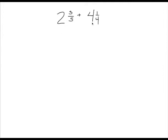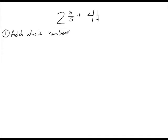For our first example, we're going to add two mixed fractions: 2 and 3 fifths plus 4 and 1 quarter. I'm going to show you two ways that you can add these mixed fractions. The first way is to add the whole numbers and then add the fractions after.